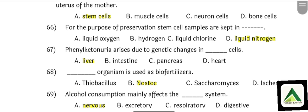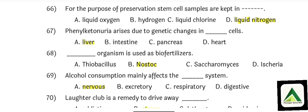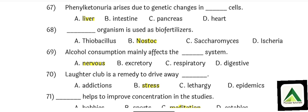Question number 65: Stem cells are present in the umbilical cord by which the fetus is joined to the uterus of the mother. Question number 66: For the purpose of preservation, stem cell samples are kept in option number D: Liquid nitrogen. Question number 67: Phenylketonuria arises due to genetic changes in option number A: Liver cells. Question number 68: This organism is used as a biofertilizer. That is option number B: Nostoc.